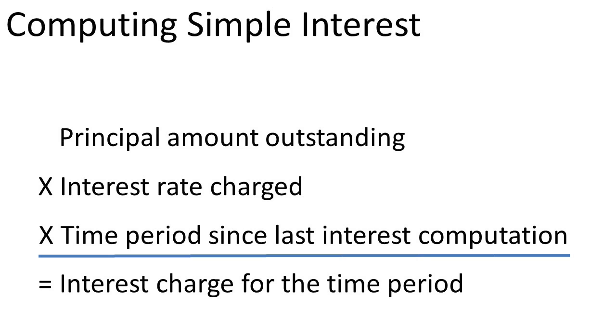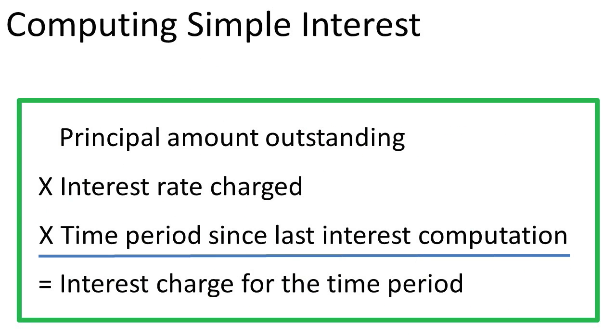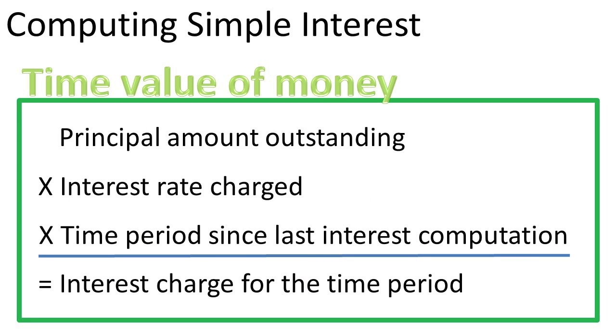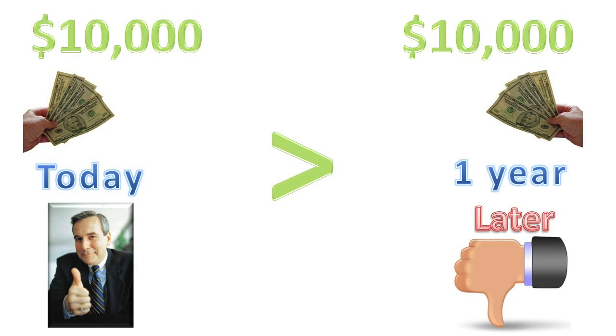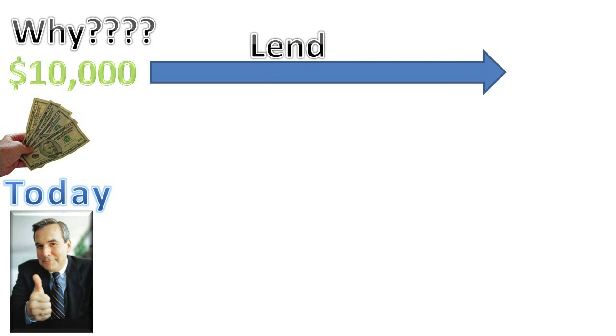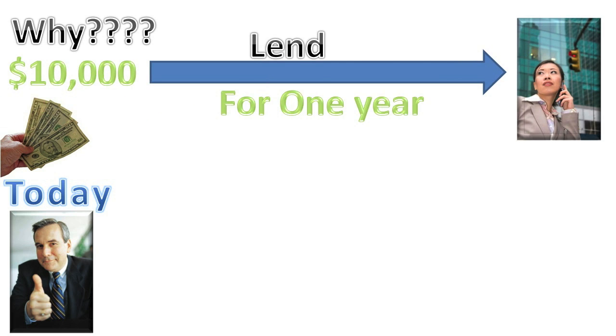The simple interest formula is one of the most basic formulas of finance and is foundational to the idea that money has a time value. For example, $10,000 in hand today has a greater value over time than receiving $10,000 a year from now. Why is that true? Because if you have $10,000 in your hand today, you could actually do something with it to earn more money, such as lend it to someone for a year at 7%.